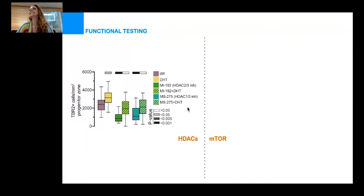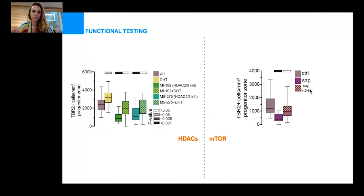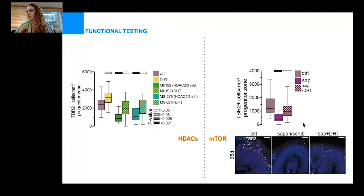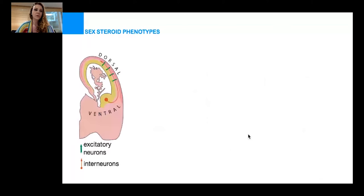Similarly, inhibition of mTOR with sapanisertib, which I'll just call SAP for short, also greatly reduced the number of intermediate progenitors in our organoids. This phenotype was also rescued with the application of DHT. You can see this here in the accompanying images where TBR2 is in white—you can see it's almost gone in the SAP treatment.